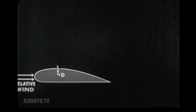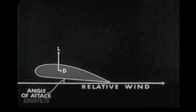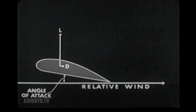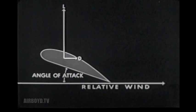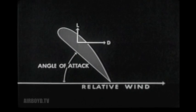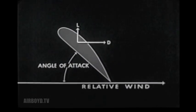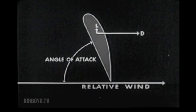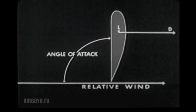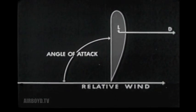Wind tunnel tests show how lift and drag vary with the angle of attack of an airfoil. In general, as the angle of attack increases, lift and drag increase up to a point where lift decreases abruptly and drag becomes the principal component. This is known as the stalling angle. From this angle to 90 degrees, drag continues to increase while lift falls off. At 90 degrees, the airfoil acts like a flat plate — it has maximum drag and negligible lift.